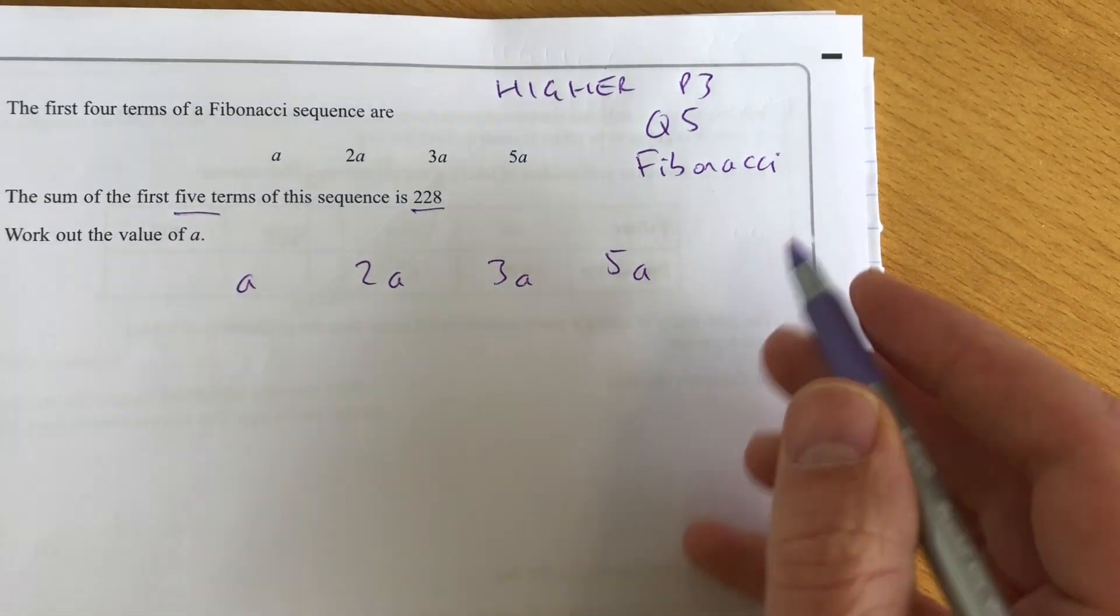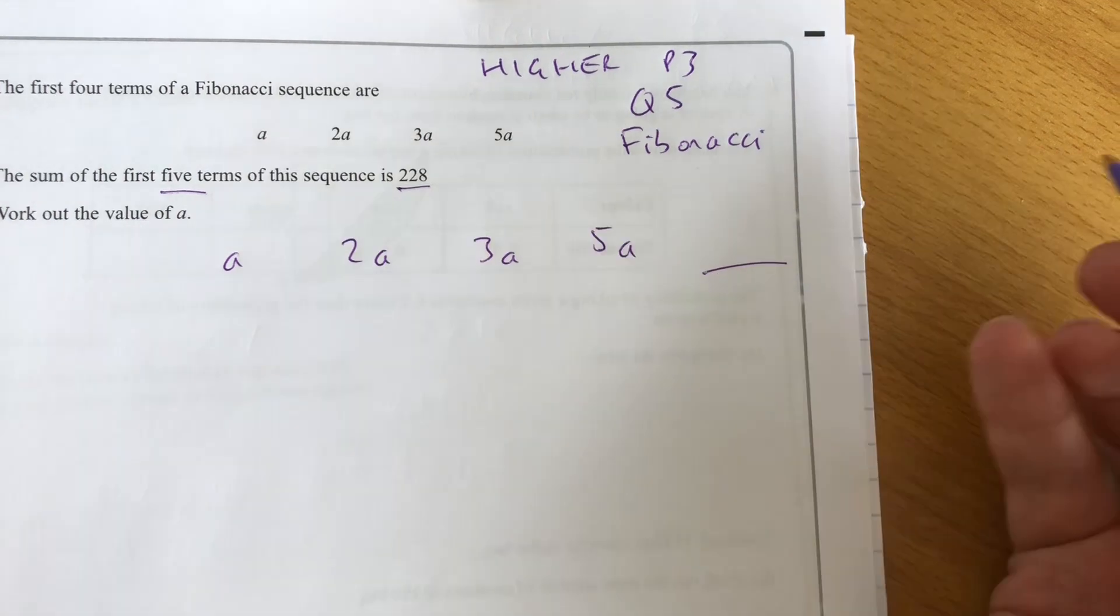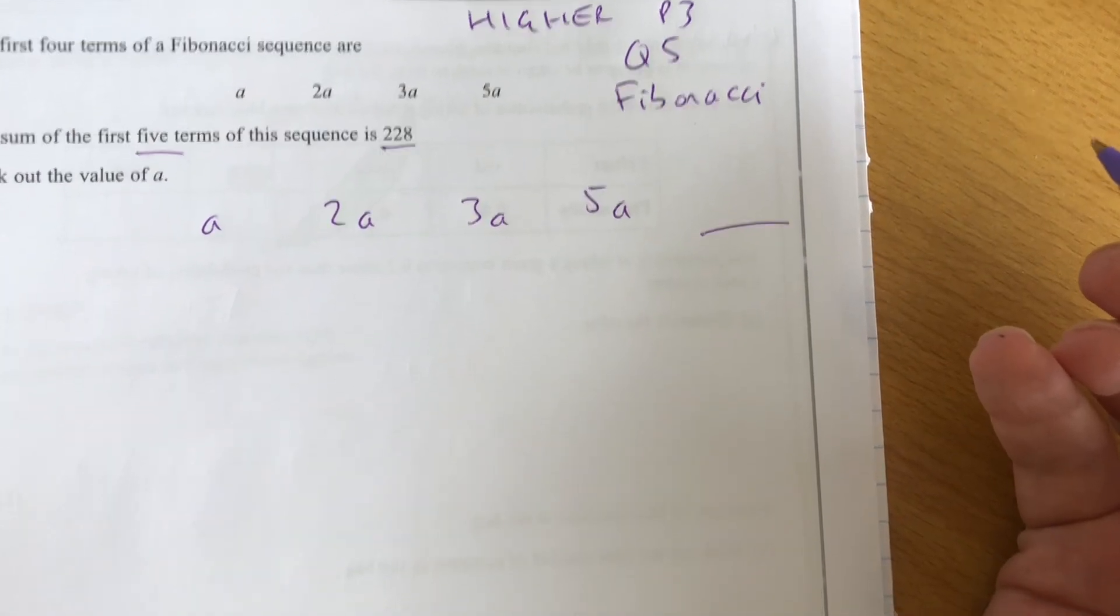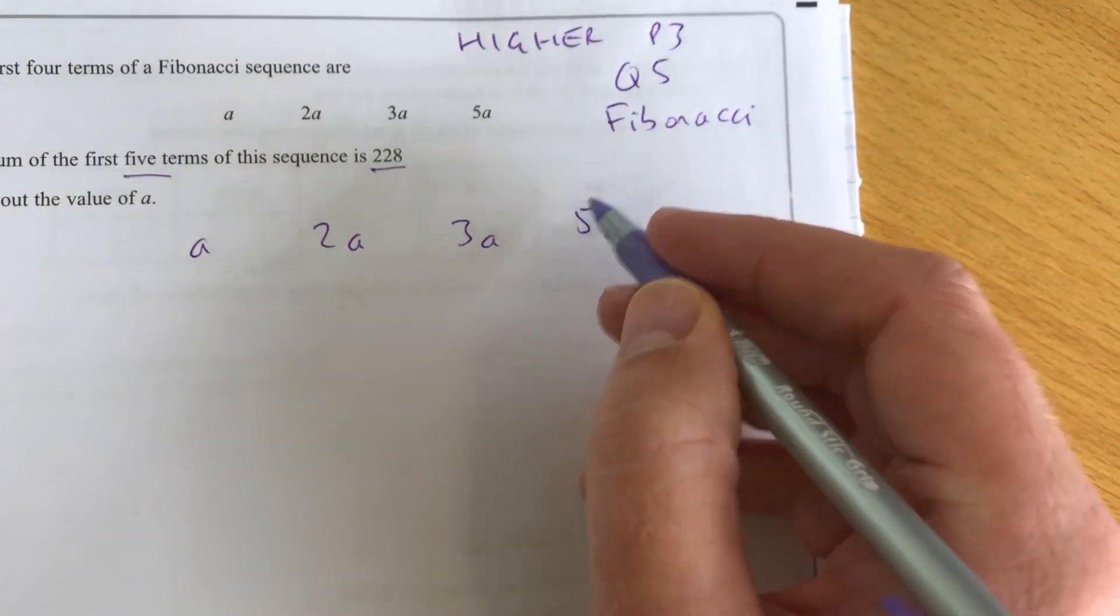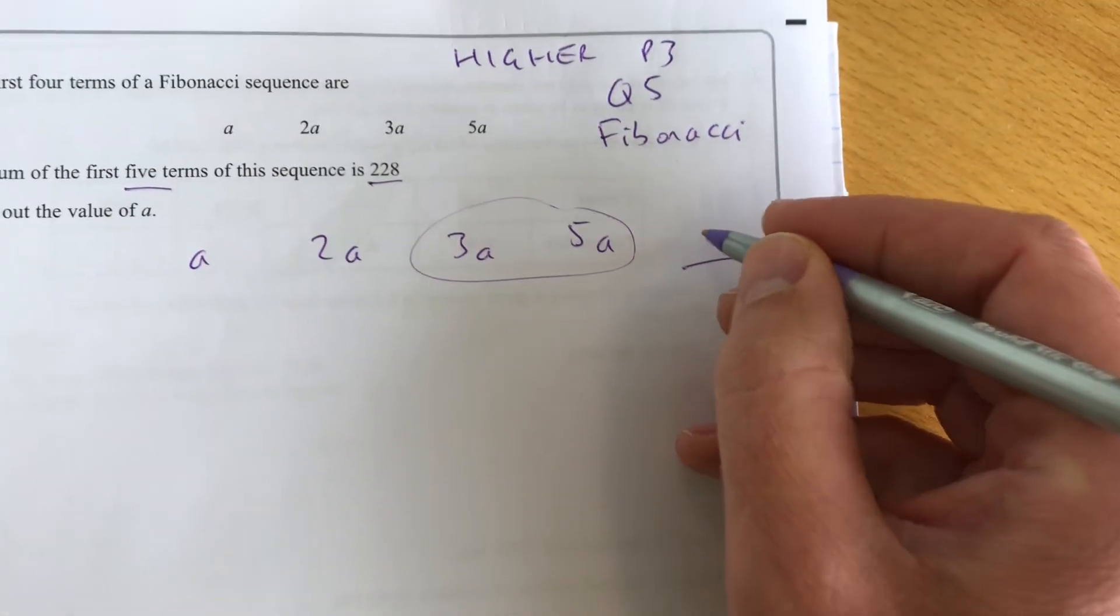How do I get the fifth term, knowing that it's Fibonacci? So in a Fibonacci sequence, you have to add the last two terms together to get the next one. So we do 3A plus 5A, which is 8A.